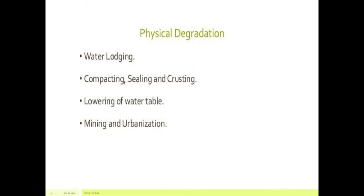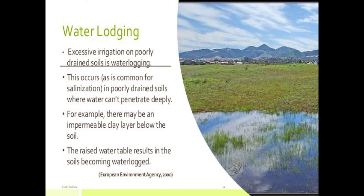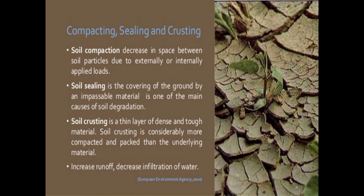In the case of physical degradation, we have seen four points: waterlogging, compaction, sealing and crusting, lowering of water table, and mining and urbanization. Waterlogging — as seen in the image in this slide — is caused by excessive irrigation on poorly drained soil. This condition is observed only in very poor draining conditions. It is a common cause of salinization in poorly drained soil, where water cannot penetrate deeply. For example, there may be an impermeable clay layer below the soil, and the raised water table results in the soil becoming waterlogged.